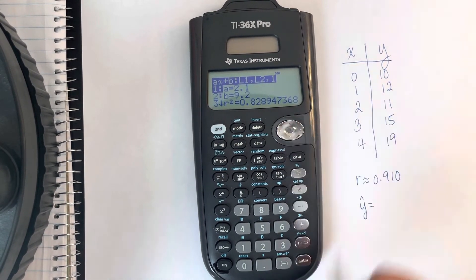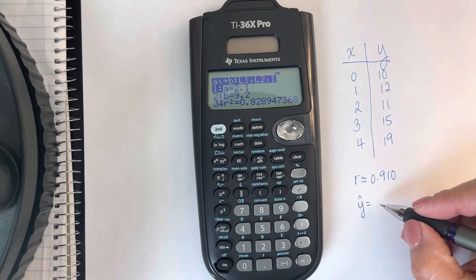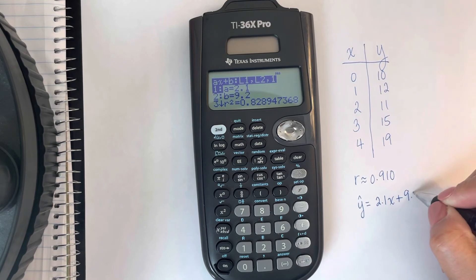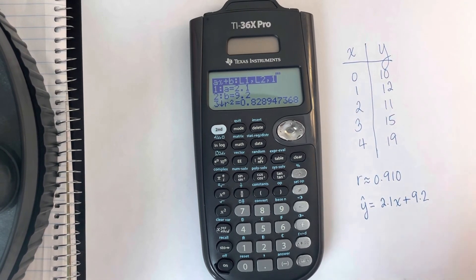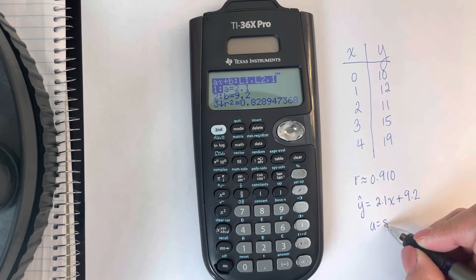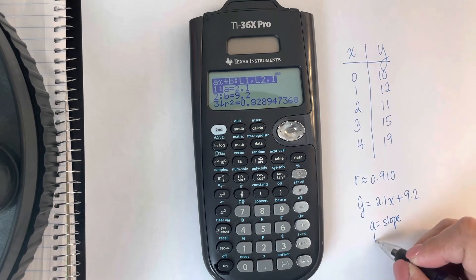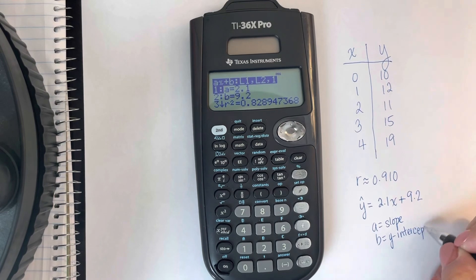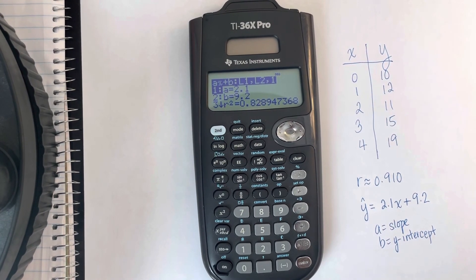Recall that A here is our slope so this is 2.1x and then B is our y-intercept. So in this case, A is slope and B is the y-intercept, which again is the opposite as the video for the TI-83 and 84.